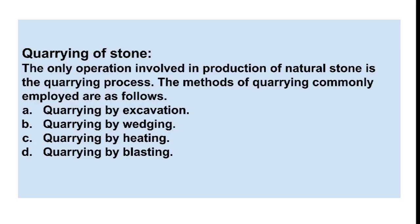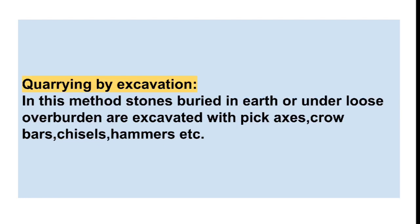Quarrying of stone: the main operation involved in the production of natural stone is the quarrying process. Methods commonly employed are quarrying by excavation, quarrying by wedging, quarrying by heating, and quarrying by blasting. In quarrying by excavation, stones buried in earth or under loose overburden are excavated with picks, pickaxes, crowbars, chisels, and hammers.